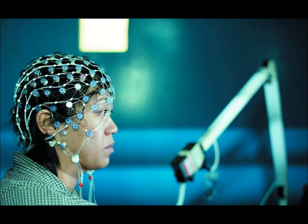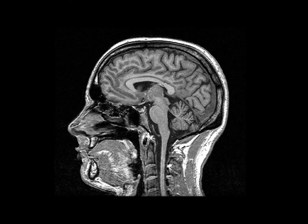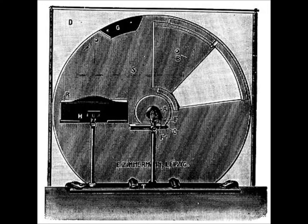The tachistoscope is used in cognitive and neuropsychological experiments. It's used to help understand perception and help determine the brain areas involved in visual perception, memory, and learning. The tachistoscope is an important device used throughout the years of psychology and continues to be an important device today.